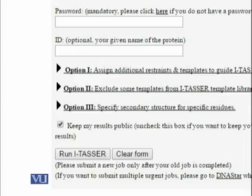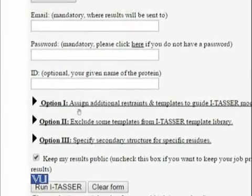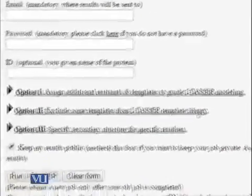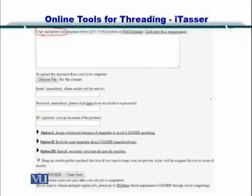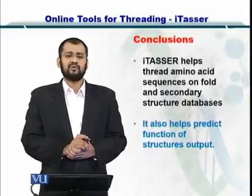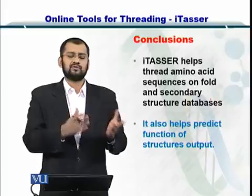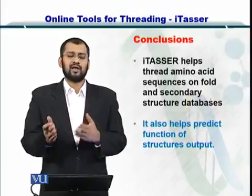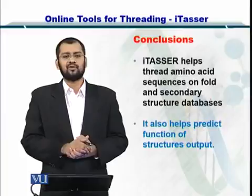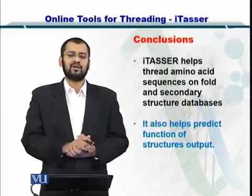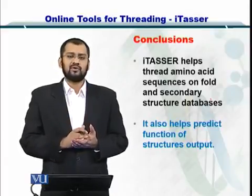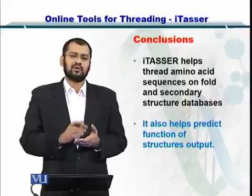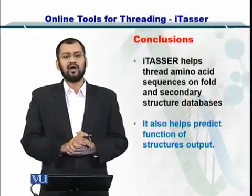I-TASSER is a very simple tool. If you are an advanced user, you can assign additional restraints and templates to help I-TASSER modify the modeling process. All you have to do is input your amino acid sequence, provide your email address and a password, and you will receive an email — possibly after one day — with the predicted structure. Besides the structure, I-TASSER will also give you the probable function of the protein.